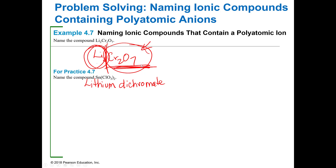Then you have Sn(ClO₃)₂. Remember, you don't indicate how many there are in the name because the charges will tell us that. So you name it by its tin designation and then ClO₃, whatever that ion is called.